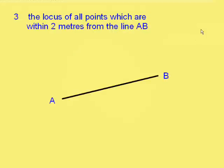The third example. This is more complicated. The locus of all points which are within 2m of the line AB. Well, if it was within 2m of the point A, then we would be able to do that just by drawing a 2m radius circle at point A. And we do the same thing at point B. But what about the rest of the line AB?